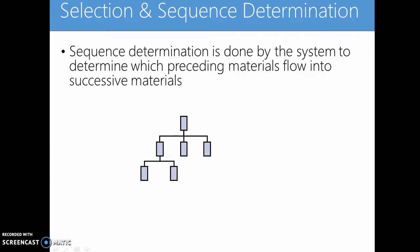Selection and sequence determination. This is done by the system to determine which preceding materials flow into successive materials. Remember, material ledger is all about transferring variances from one material either to a subsequent material or back into itself.